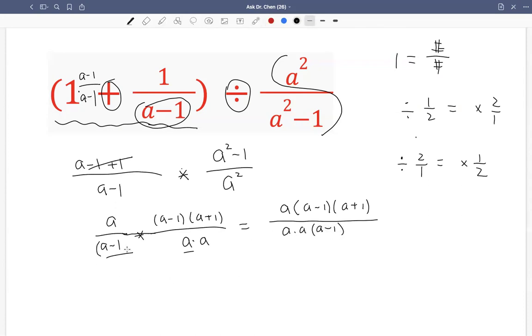I can write them like this. Now I look for common factors in the numerator and in the denominator. Because once we have the numerator same as the denominator, they just change to be 1. So we see a over a, that becomes 1. We see a minus 1 over a minus 1, that becomes 1.